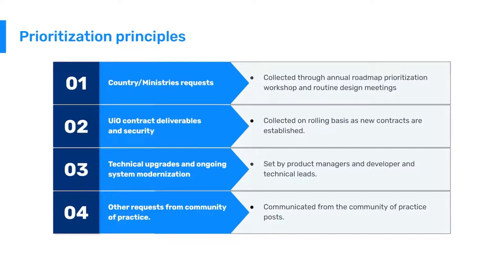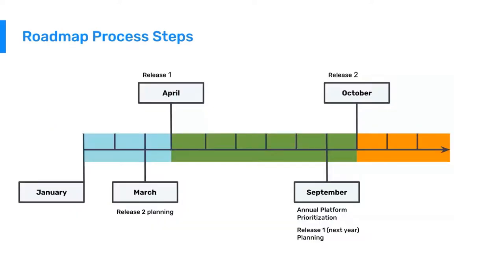This is an illustrative timeline of the roadmap process steps. Starting at the beginning of the year, we have two annual releases of the platform — in April and October. We begin planning for the following release the month before the first release is completed.